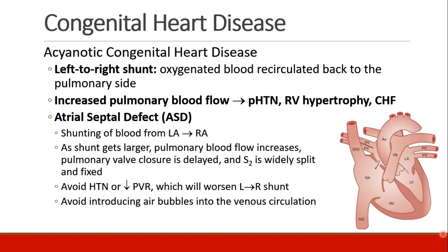The non-cyanotic heart diseases usually involve a left to right shunt, which means oxygenated blood is being recirculated back to the pulmonary side. As a result, they have increased pulmonary blood flow. Their pulmonary circulation is seeing the same blood over and over again, and this can lead to pulmonary hypertension, right ventricular hypertrophy, and congestive heart failure.